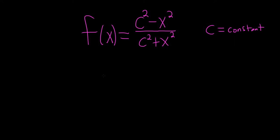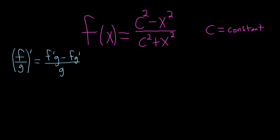In this problem we have to find the derivative of this function. We're going to use the quotient rule. Recall the quotient rule says if you have f over g and you take the derivative, it's the derivative of the top times the bottom minus the top times the derivative of the bottom, all over the bottom squared. That is the formula for the quotient rule.